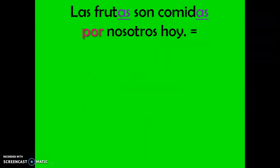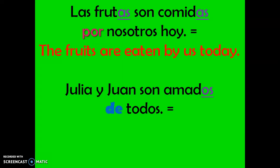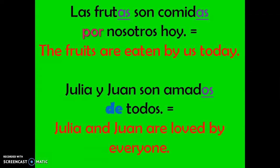Our next example — read it with me please: Las frutas son comidas por nosotros hoy — the fruits are eaten by us today. Muy bien. And our last example: Julia y Juan son amados de todos — Julie and John are loved by everybody. Notice in our last example, we used de instead of por, because now we have an emotion — loved by.